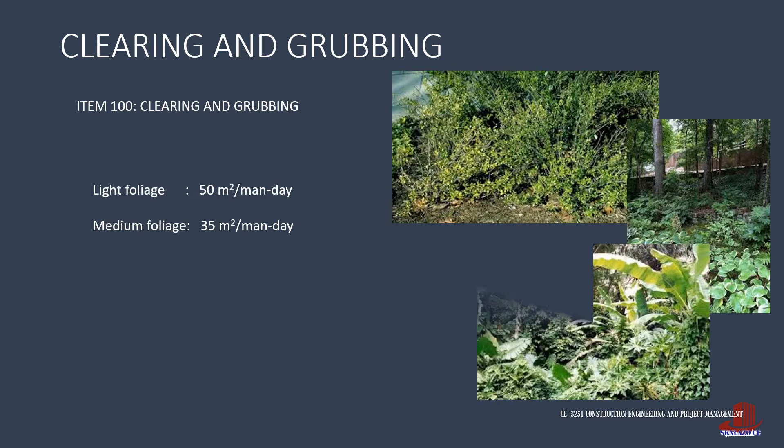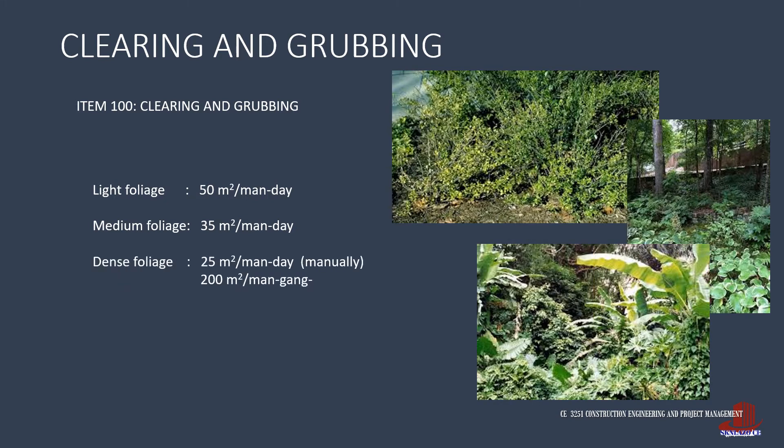For heavy foliage, manual labor is reduced to 25 square meters per person per day, or 200 square meters per a group of men per day if they will be using a chainsaw. One unit of man-gang depends on the activity, and for clearing and grubbing, the chainsaw will be operated by one individual while being assisted by a fellow laborer.